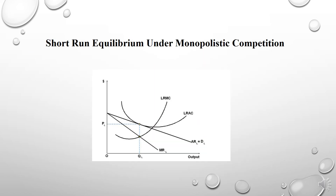Now we'll move to the short run equilibrium under monopolistic competition. As you can see from the chart, the firm will produce the quantity where the marginal cost curve intersects with the marginal revenue curve. The price is set based on where the quantity produced falls on the average revenue curve. The profit the firm makes in the short term is represented by the gray rectangle, or the quantity produced multiplied by the difference between the price and the average cost of producing the goods.